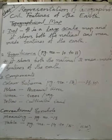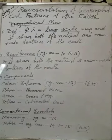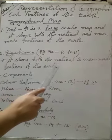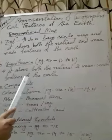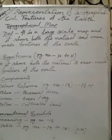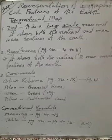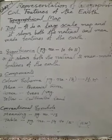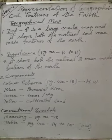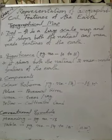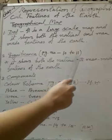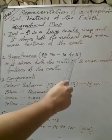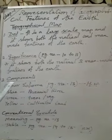One important significance of a topo map is that it shows both natural and man-made features of the earth. Beyond this, it is important for engineers to make roadways, railway systems, and canals, and it is also important for the study of geology. There are many more uses — you should follow pages 10 to 11 in the book.